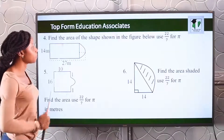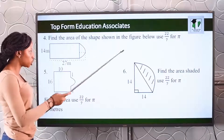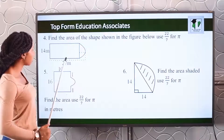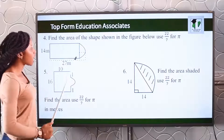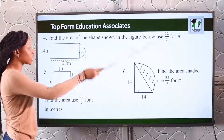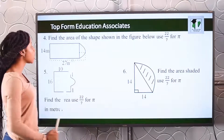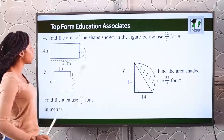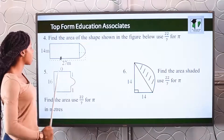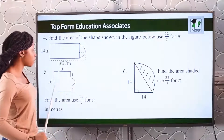Number four: find the area of the shape shown below, using pi as 22 over 7. If you look at this shape, it's a compound shape — you can see a semi-circle and a rectangle. We are asked to look for the area of this compound shape.